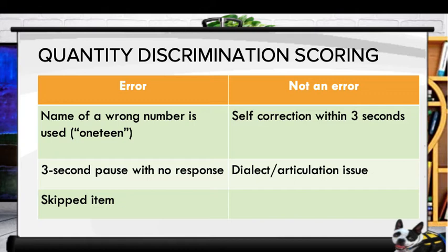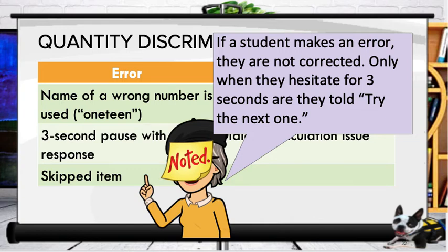Common errors for quantity discrimination include naming a wrong number, giving a three-second pause without responding or self-correcting, or skipping an item. Things that look like errors but are not: self-correction within three seconds, or any dialect or articulation issue. If the student makes an error, they are not corrected. Only when they hesitate for three seconds are they told 'try the next one.'